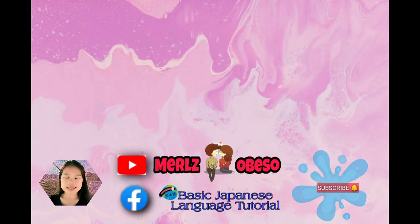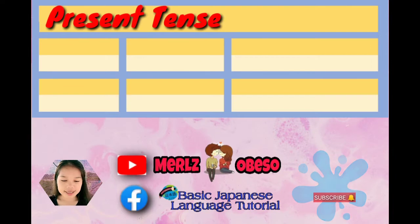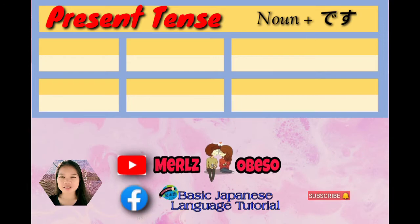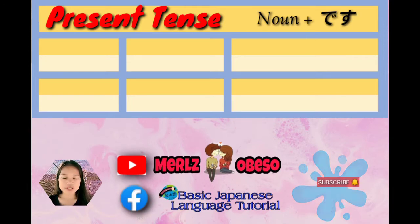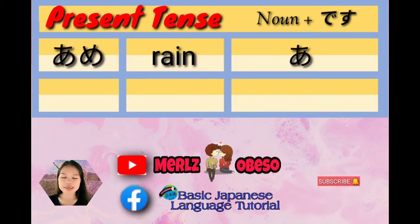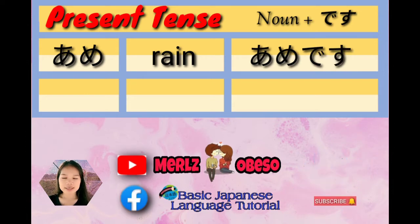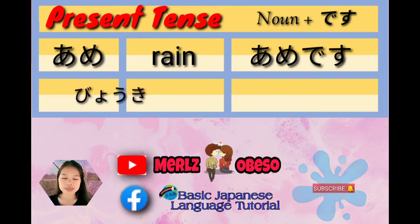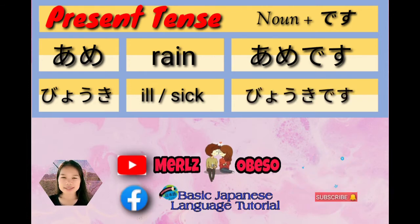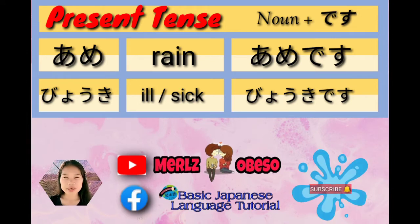So, first subform: present tense. Ang rule niya is noun plus des. Wala tayong ika-cancel. So, first example: ame, rain. Noun and ad des magiging ame des — it's raining. Next, buki, ill or sick. Noun and ad des magiging buki des — I'm sick or I'm ill.